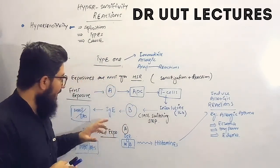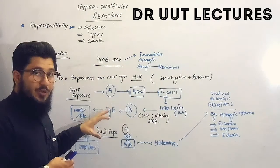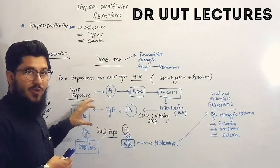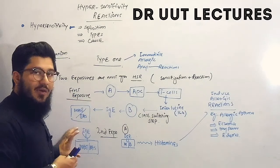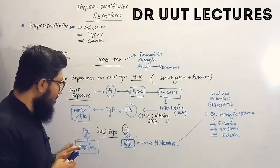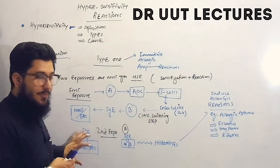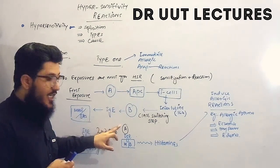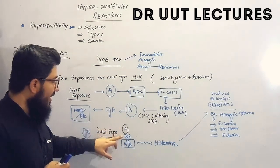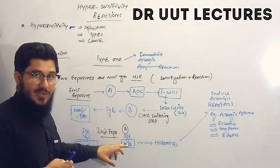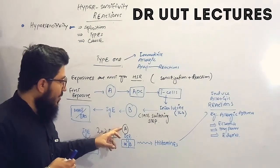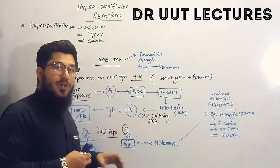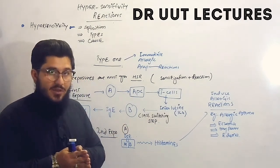The IgE produced will go and bind to mast cells or basophils. So after the first exposure, IgE is bonded to the mast or basophil cells. In the second exposure, when the same antigen enters the body, it will bind with the IgE already present on the mast and basophil cells.